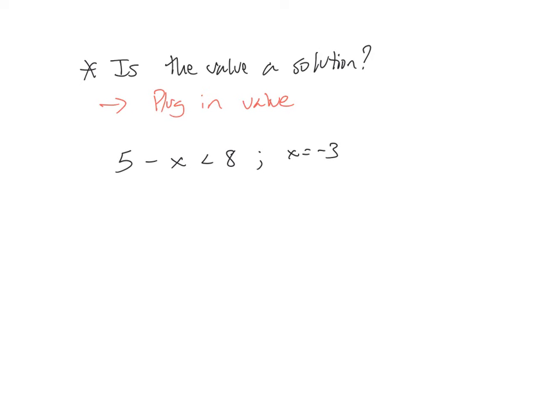So it's tricky because I'm putting negative 3 where the x is, and sometimes we leave out that minus sign right there. So there's a minus sign right there from the problem and then the x is negative 3.